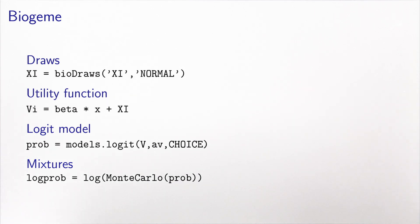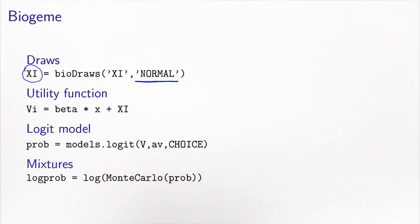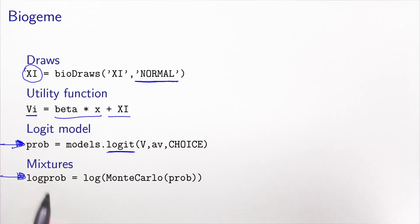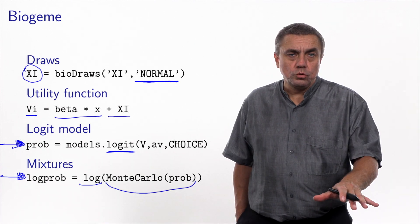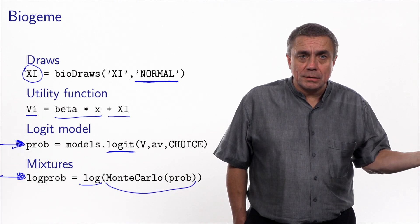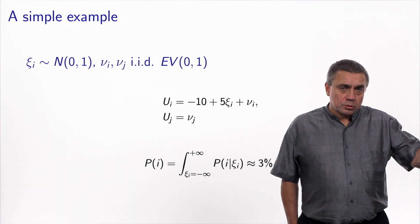How do you implement this in BioGEM? It's very simple. We follow the same logic: we define xi as draws and specify the distribution — normal in this case. Then we write a utility function: V_i equals beta*x plus xi, exactly as shown in the equation. Then we write the conditional probability — a logit model. To do the integration, I calculate the log of the probability as the Monte Carlo approximation of the integral and apply the log. I refer you to the BioGEM webpage for more details on the syntax.